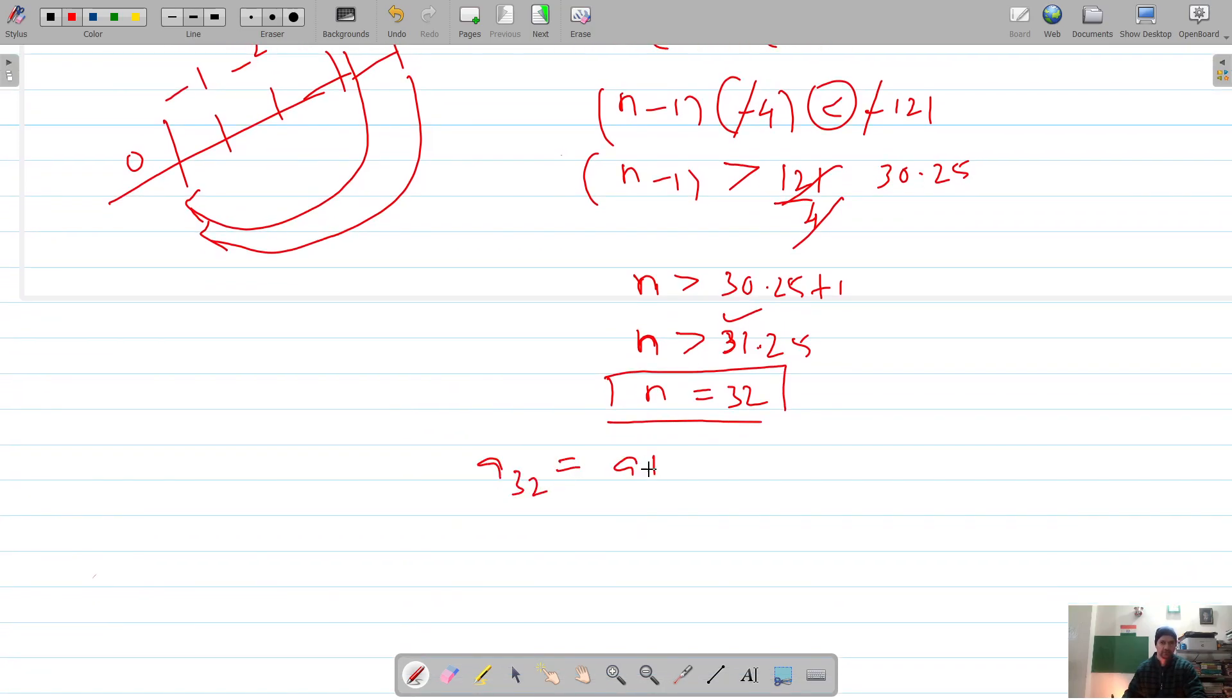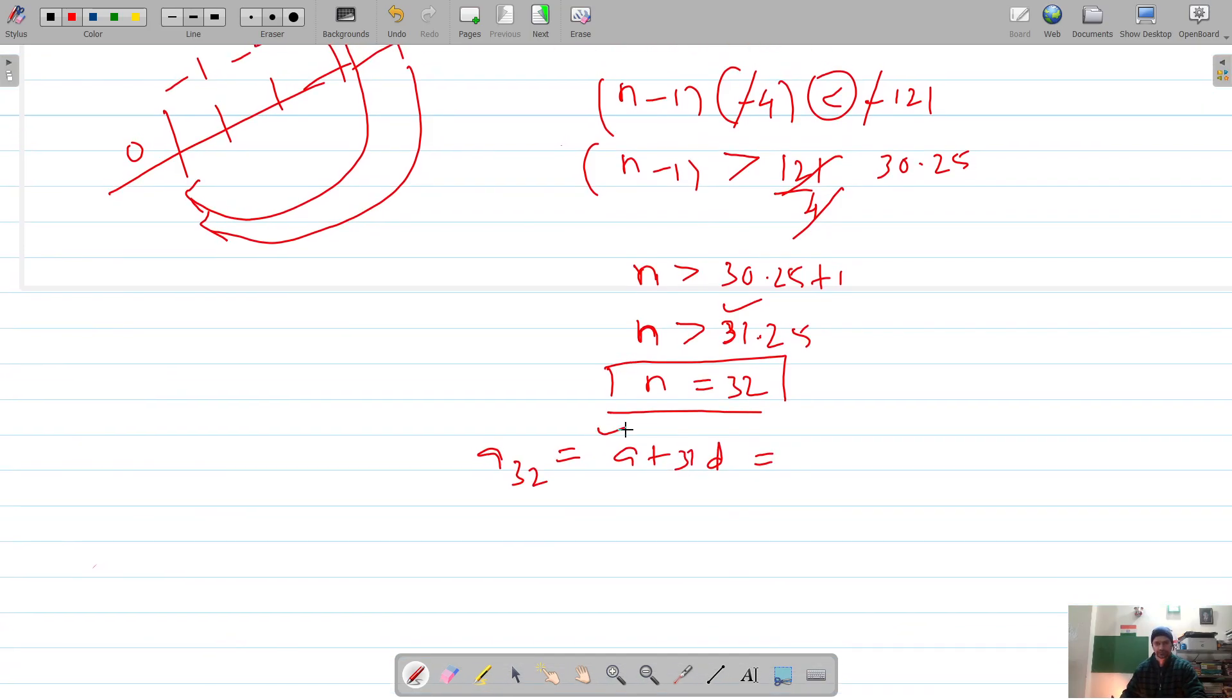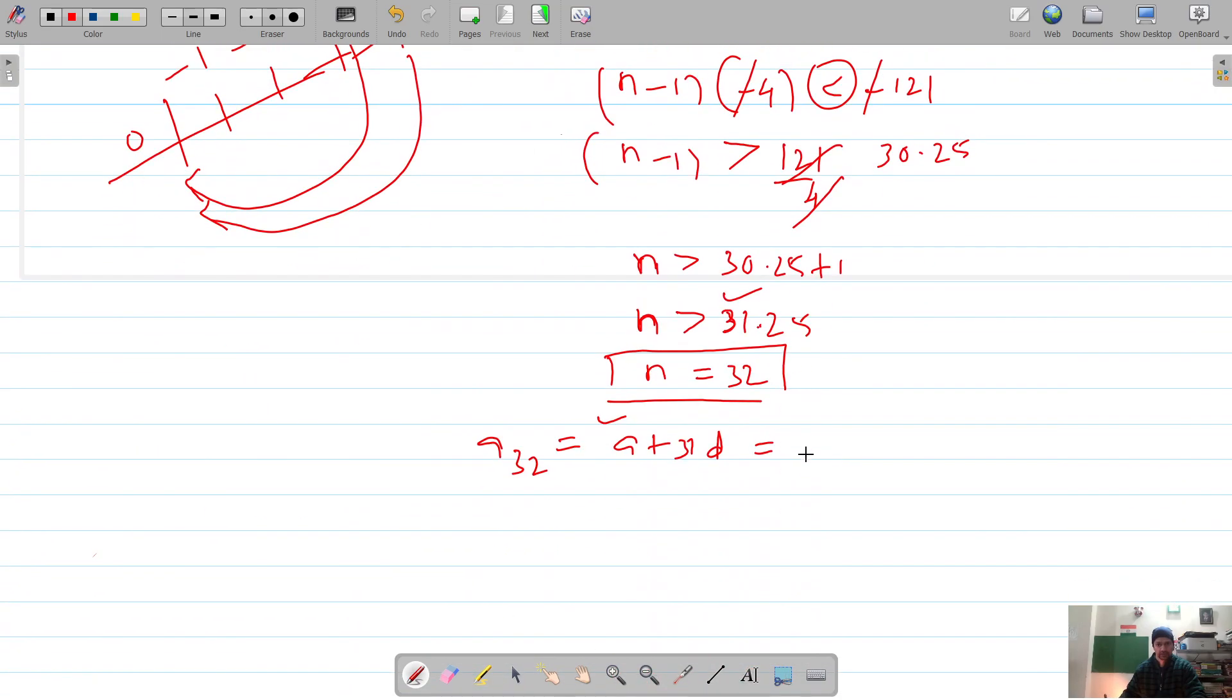We can verify that by evaluating. a_32 is 121 plus 31 into d, which is negative 4. So that gives me 121 minus 124, and it's negative 3. So our 32nd term is the first negative term of this AP.